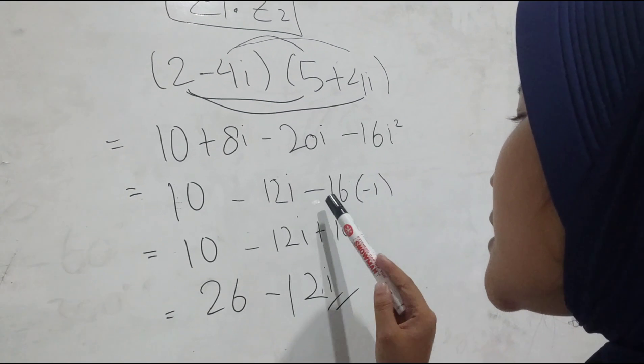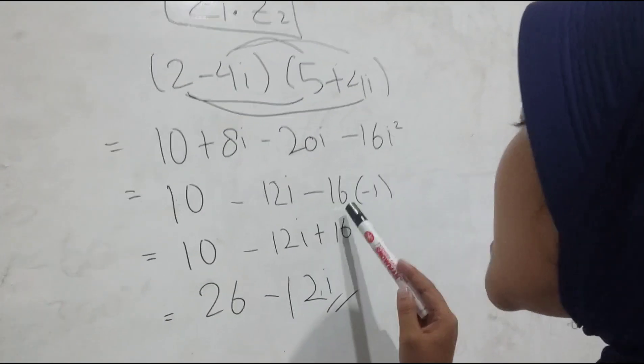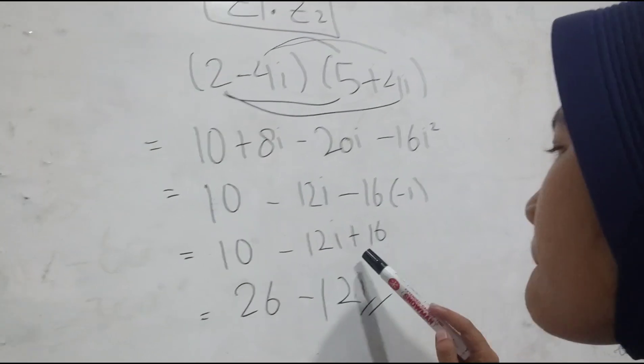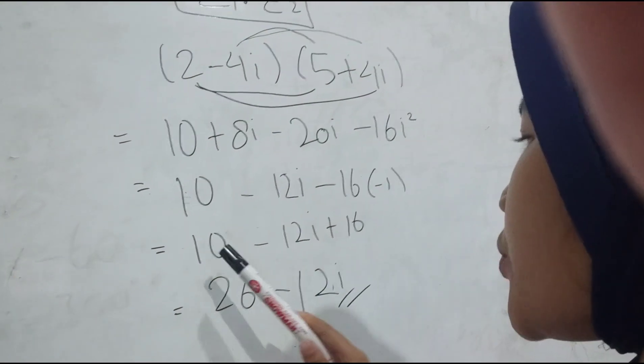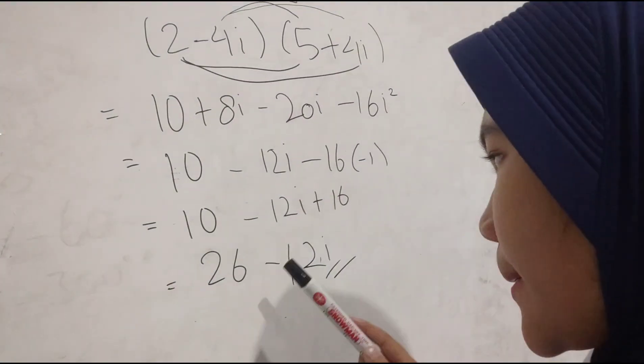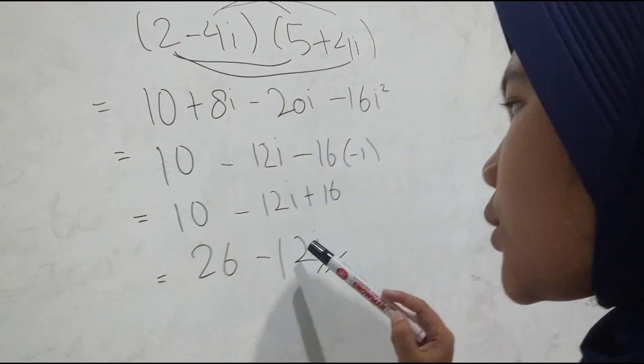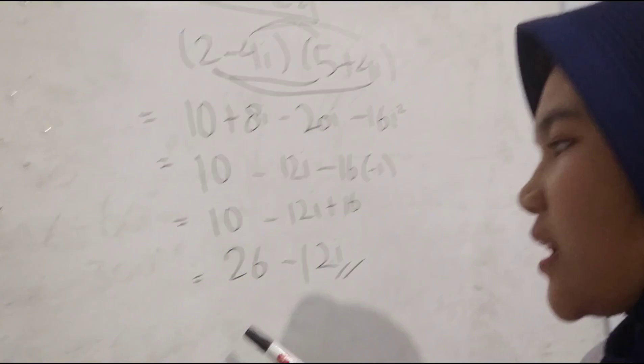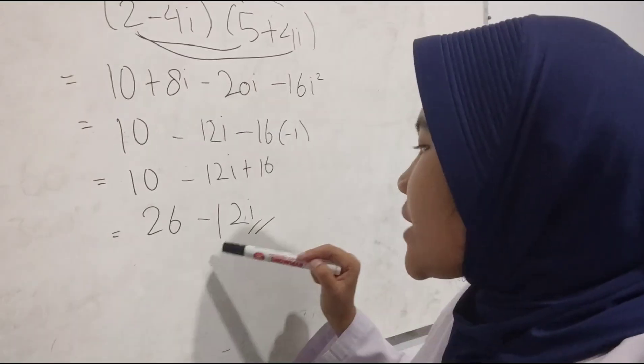Karena ini min 16 dikali min 1 jadi plus 16. 10 ditambah 16 sama dengan 26. 12i nya turun jadi hasilnya 26 min 12i.